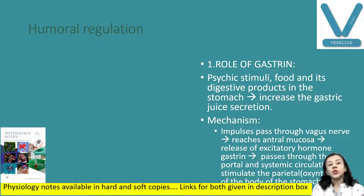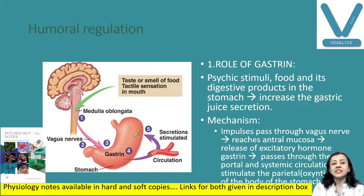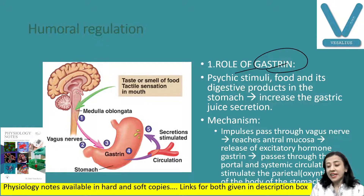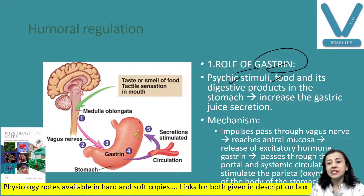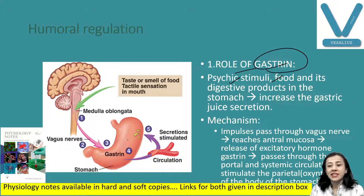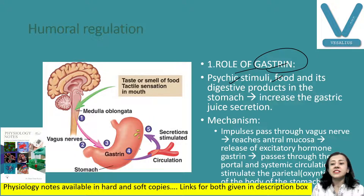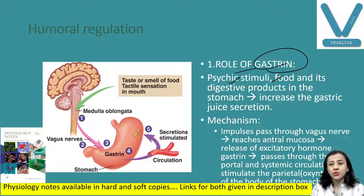Now what is humoral regulation? Humoral regulation acts through body fluid, commonly hormones, and the important hormone here is gastrin. Gastrin is released by psychic stimuli or food and digestive products when they reach the pylorus, increasing gastrin release. These impulses travel through the vagus to reach the pyloric antrum and cause release of the hormone gastrin. This gastrin then passes through blood vessels and increases secretion of gastric acid.